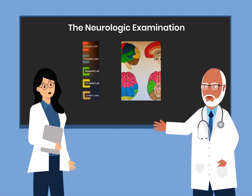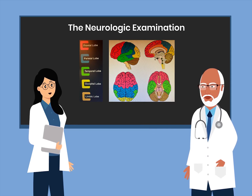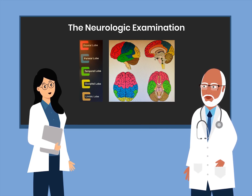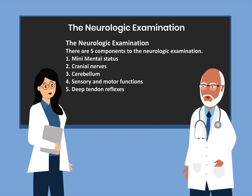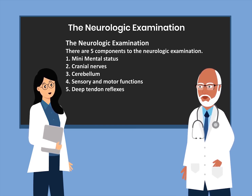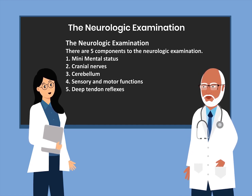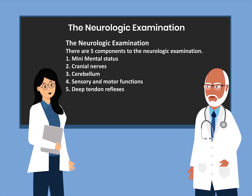Here's a schematic of the brain. Now let's talk about the neurologic exam. There are five components to the neurologic examination: the mini mental status, cranial nerves, cerebellum, sensory and motor functions, and the deep tendon reflexes.